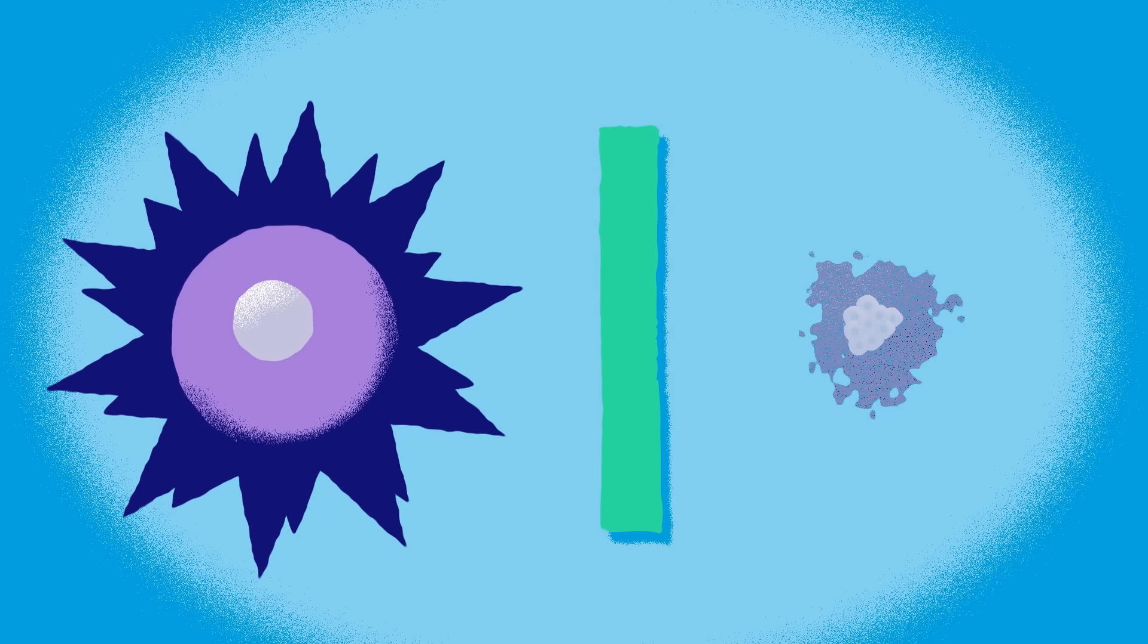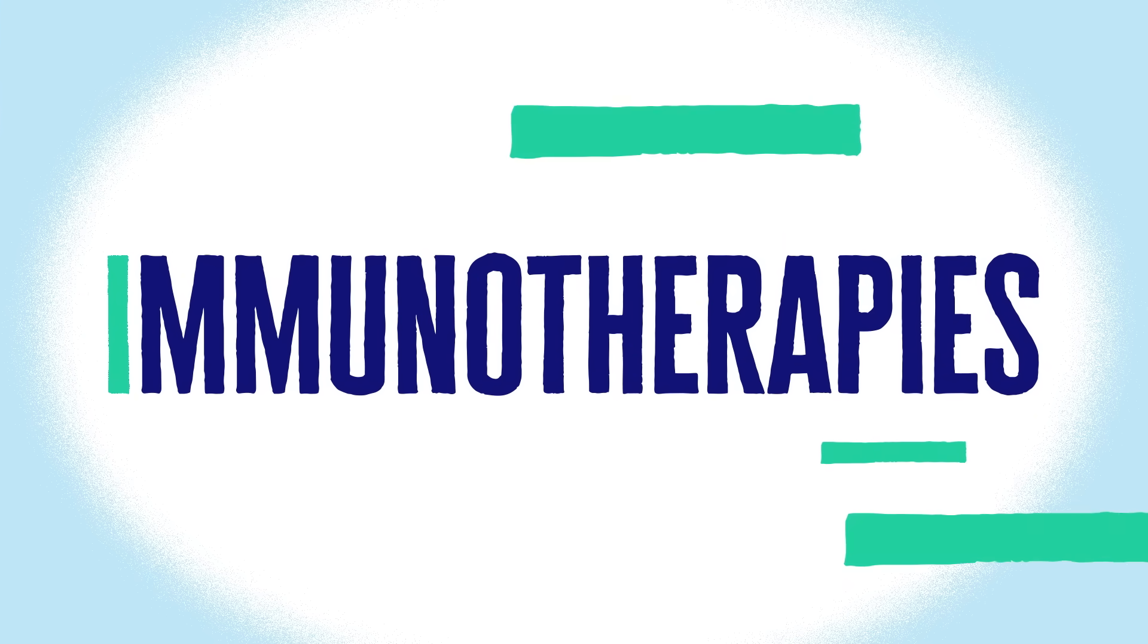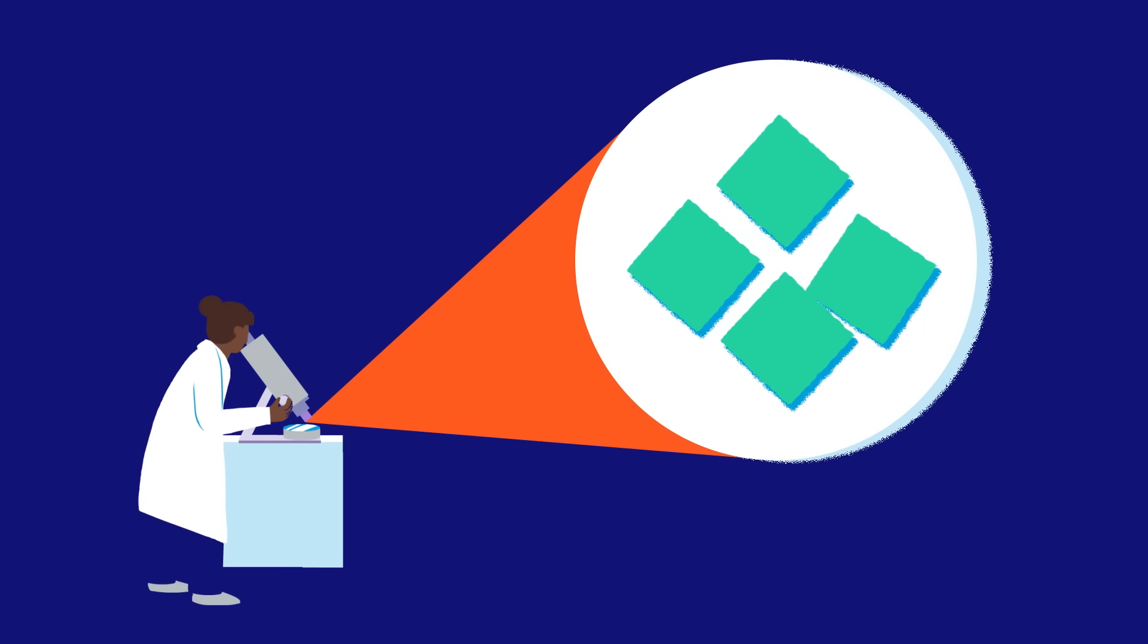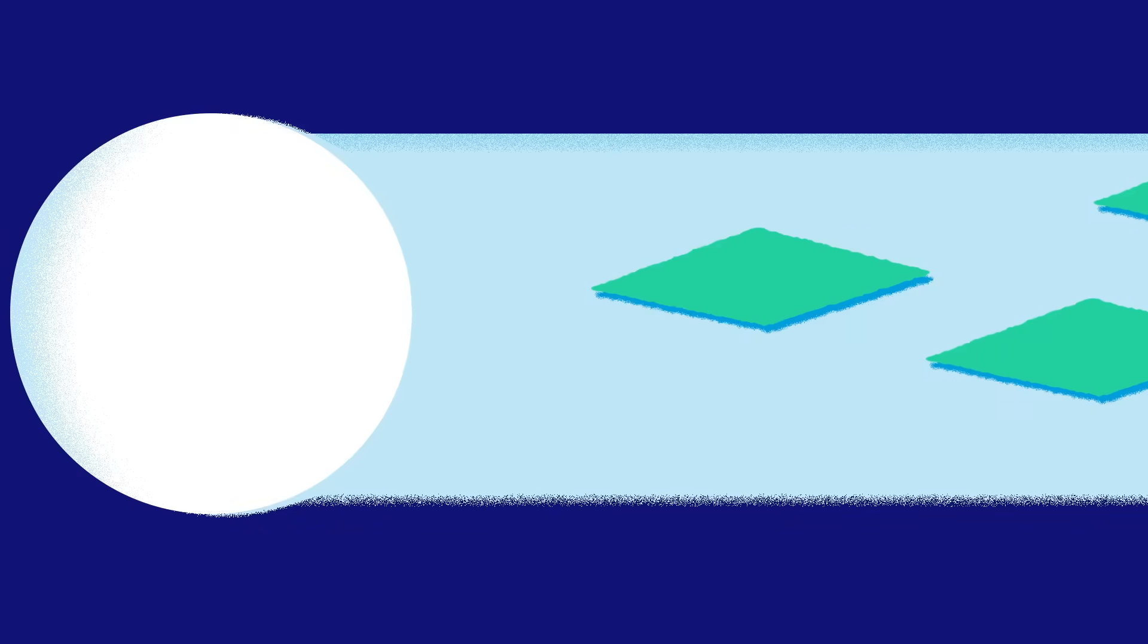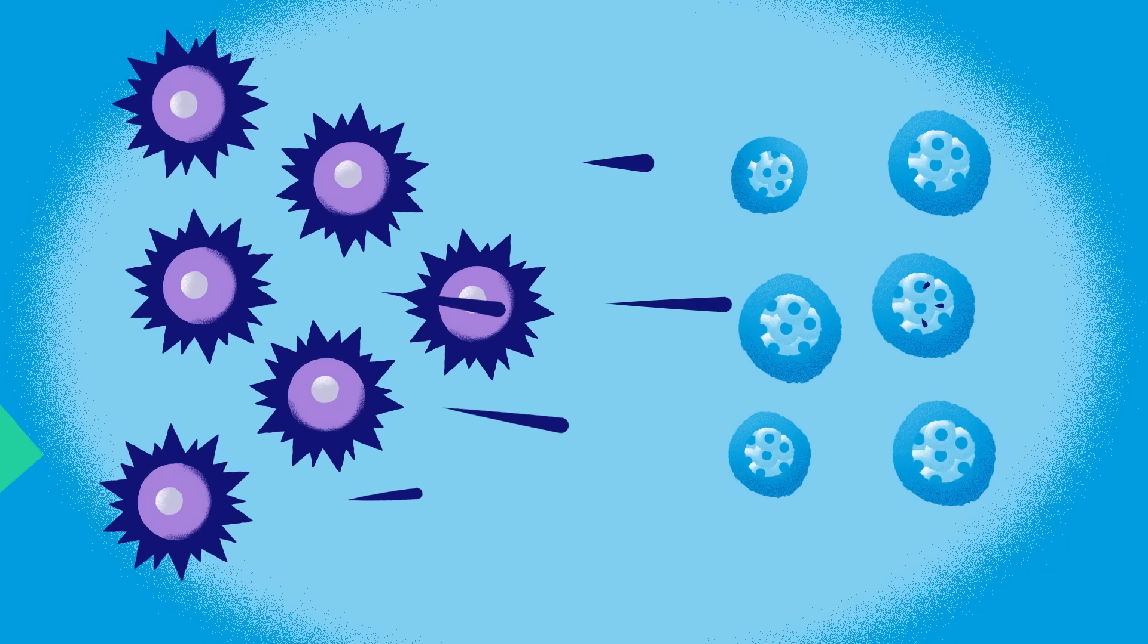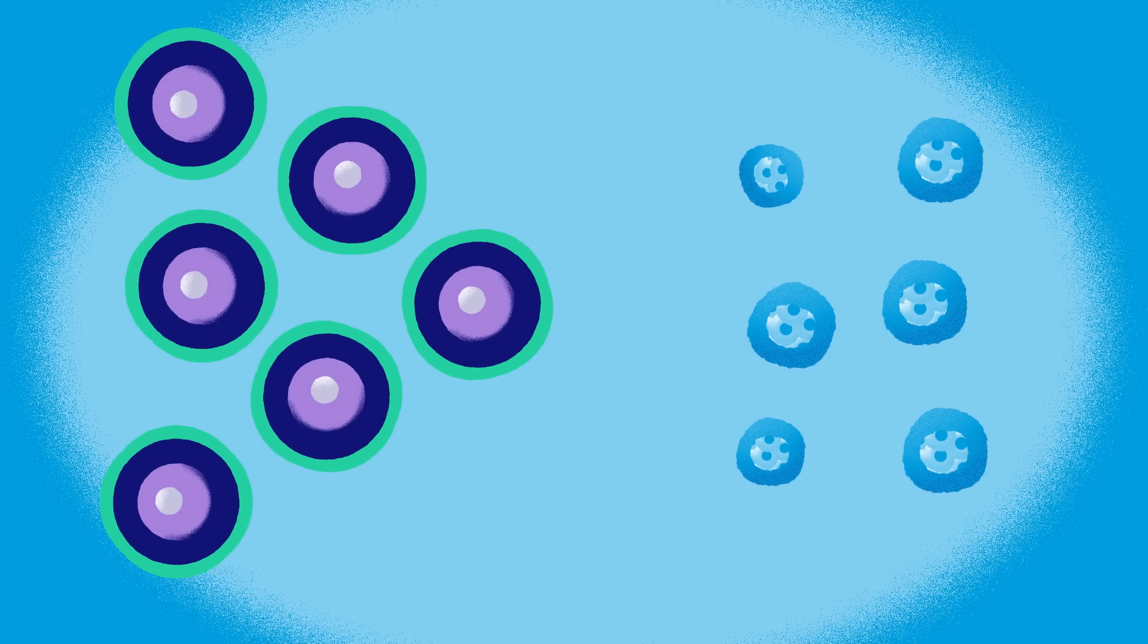But what if we could stop the immune system attack? That's what new treatments called immunotherapies are designed to do. Immunotherapies work to reprogram the immune system. The treatments can block killer immune cells to stop or slow down the destruction of insulin-producing beta cells.